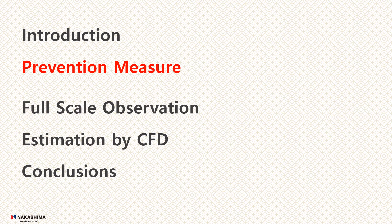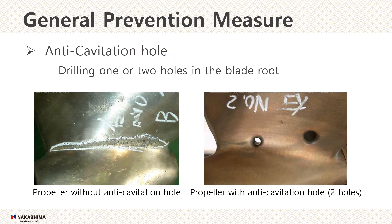I'd like to talk about prevention measures for root erosion. As the general measure in Japan, one or two holes called anti-cavitation holes are drilled on the root of the propeller to suppress root erosion. The figure on the left is the normal propeller, and on the right is the propeller with anti-cavitation holes. This example has two holes drilled per blade. Taking this measure, the root cavitation erosion can be somewhat suppressed, but not completely prevented, and customers demand further improvement.